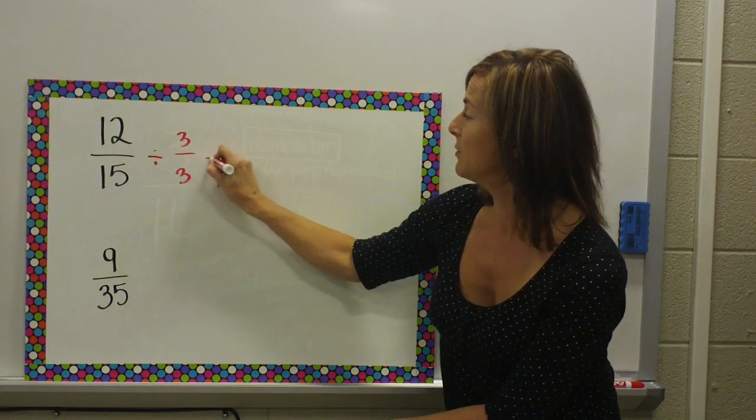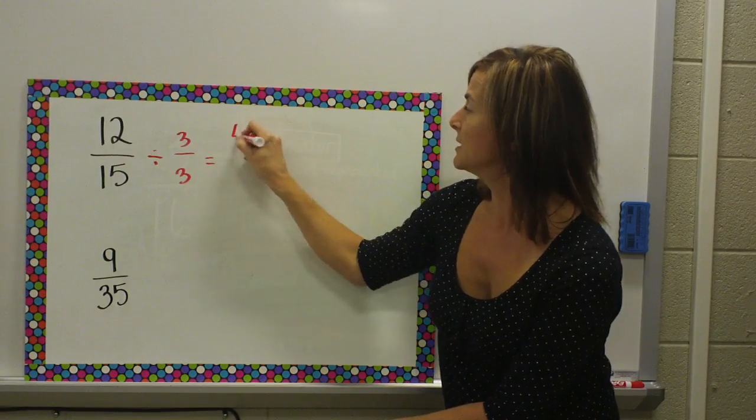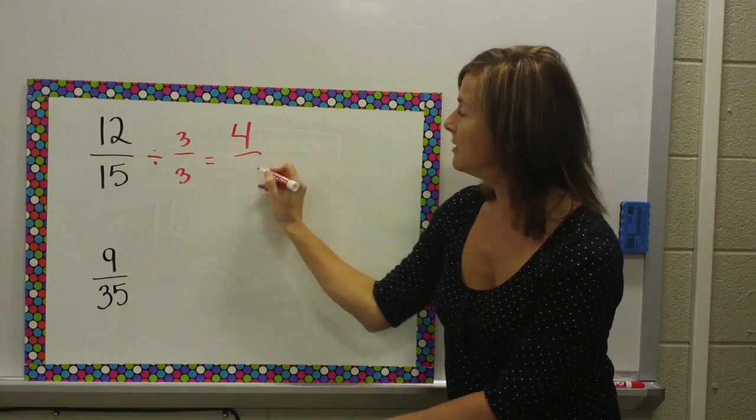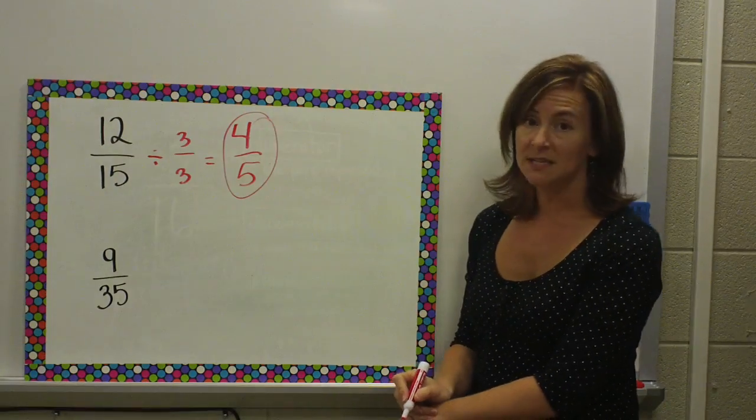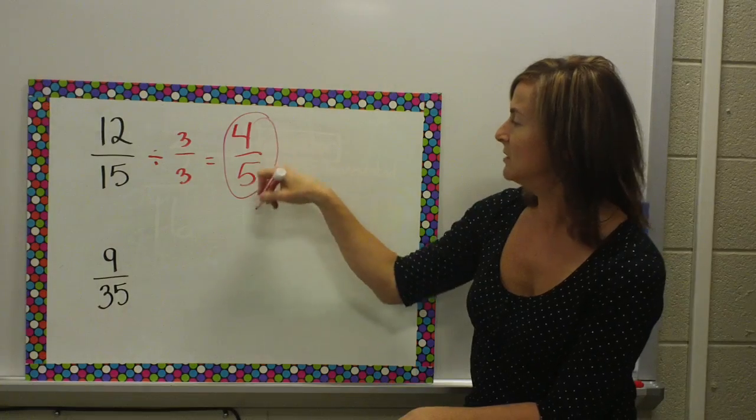So, if I divide both of these by 3, 12 divided by 3 is 4. 15 divided by 3 is 5. 4 fifths is simplest form, because I cannot divide these.